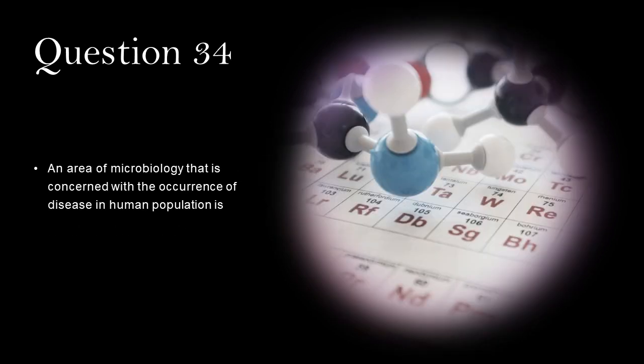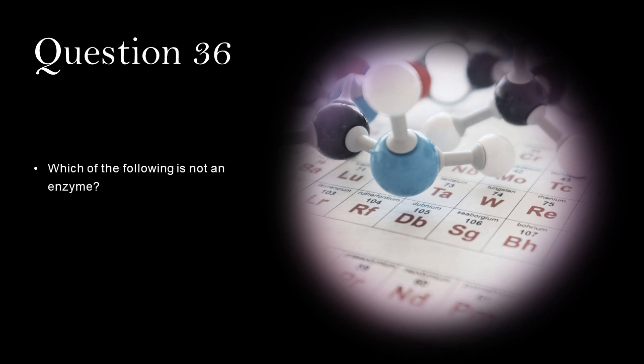The number of electrons of a neutral atom is automatically known if one knows the atomic number. The area of microbiology that is concerned with the occurrence of disease in human population is epidemiology. Which of the following is not an enzyme? Secretin.